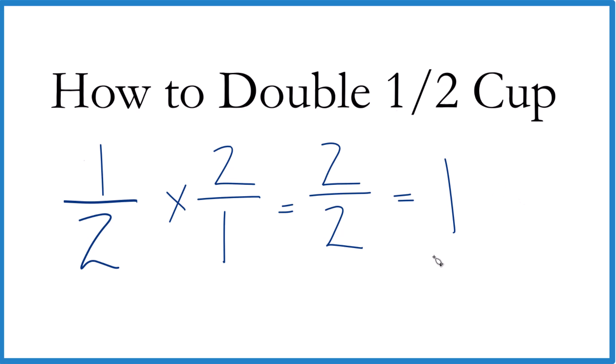There is one other way we could do this. We could say one half plus one half, because that would be doubling it as well. And here, since the denominators are the same, we keep those the same.